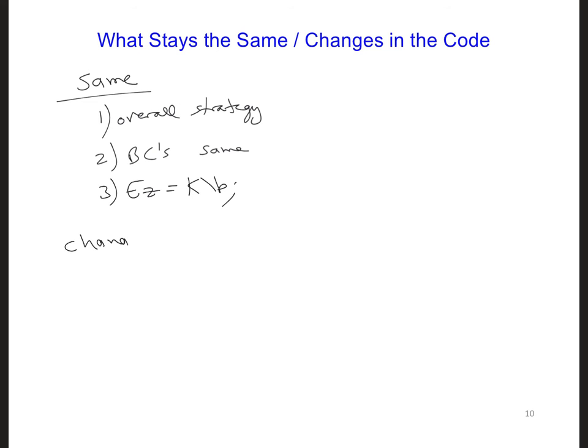Now what needs to change are six things. We need to change nn, the number of nodes.